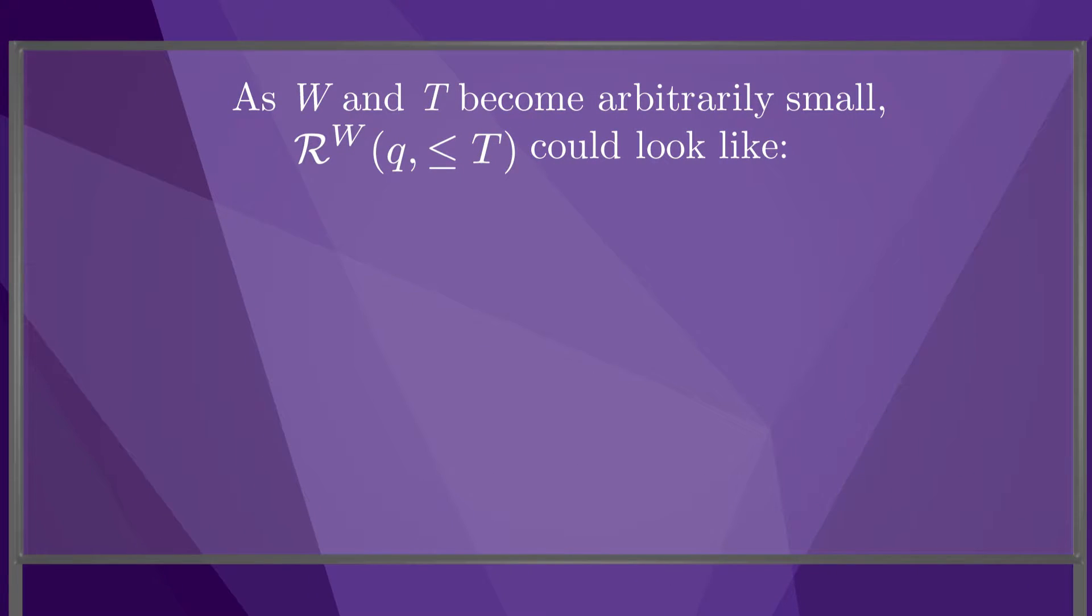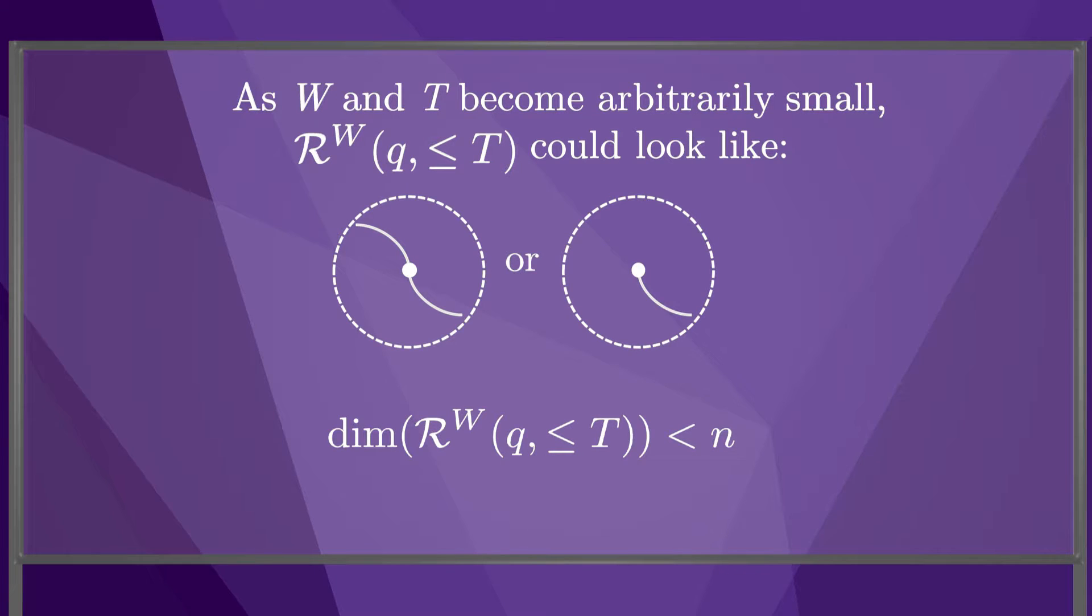In the limit as W and T become arbitrarily small, the reachable set could look like this. The robot is locally confined to a lower-dimensional subset of its configuration space.